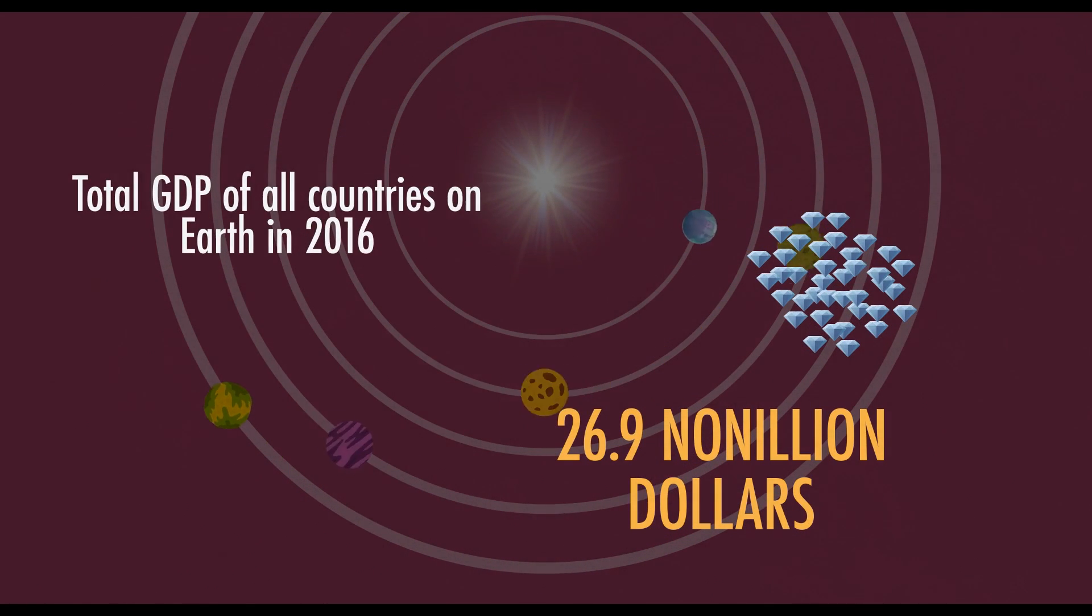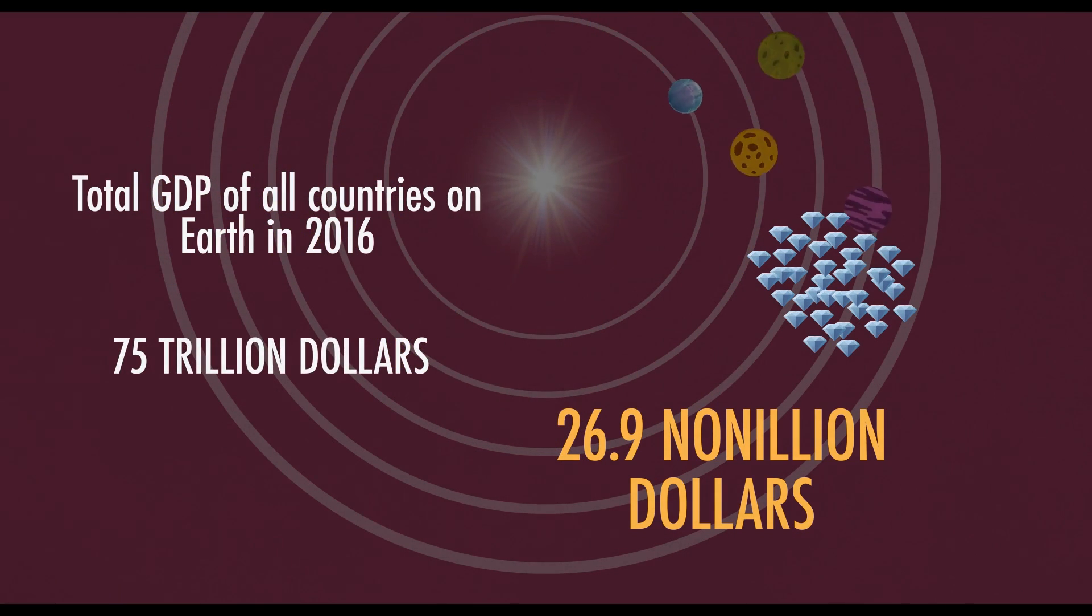To put it into perspective, the total GDP of all countries on Earth in 2016 was only about $75 trillion dollars. That's 384 quadrillion times less than the value of those diamonds.